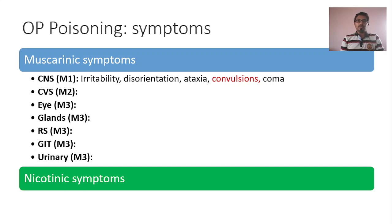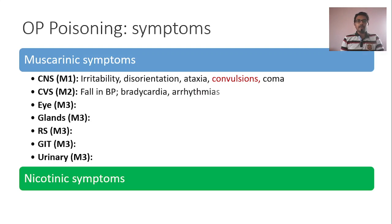M2 receptors — remember, whenever M2 receptors are activated by acetylcholine, there is inhibition. The same thing is seen with OP poisoning as well. Whenever M2 receptors are activated, there is bradycardia, falling BP, and bradyarrhythmias.